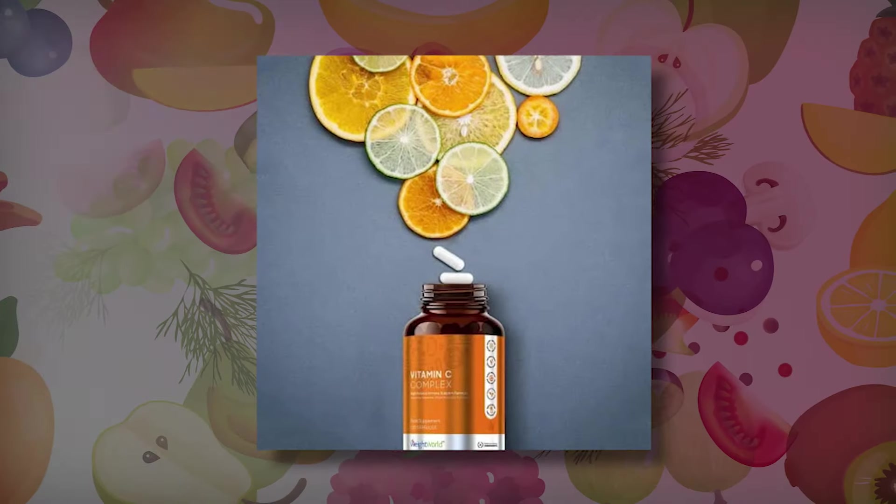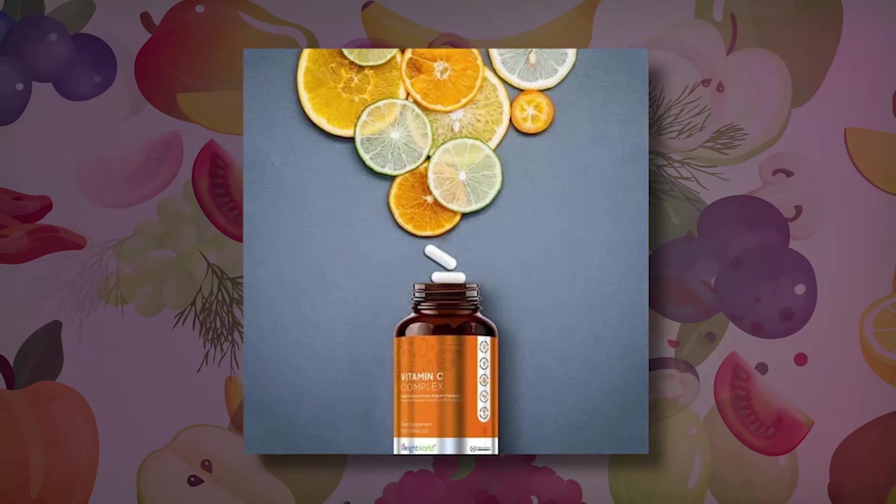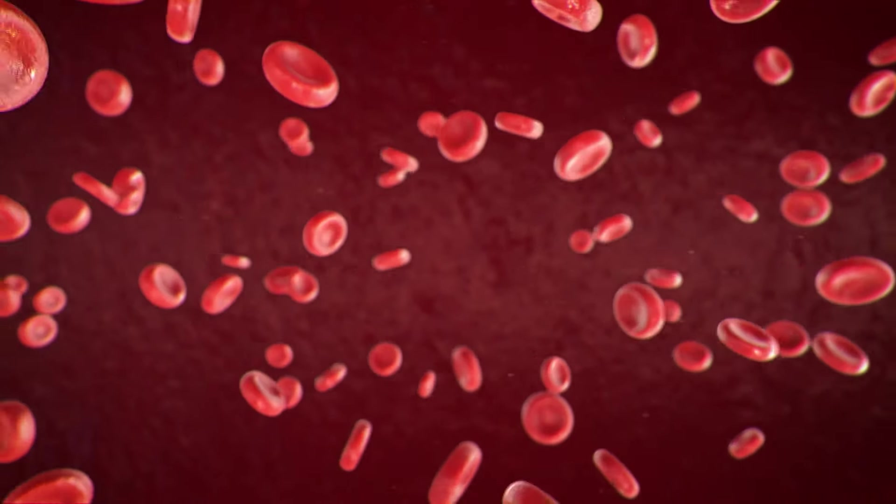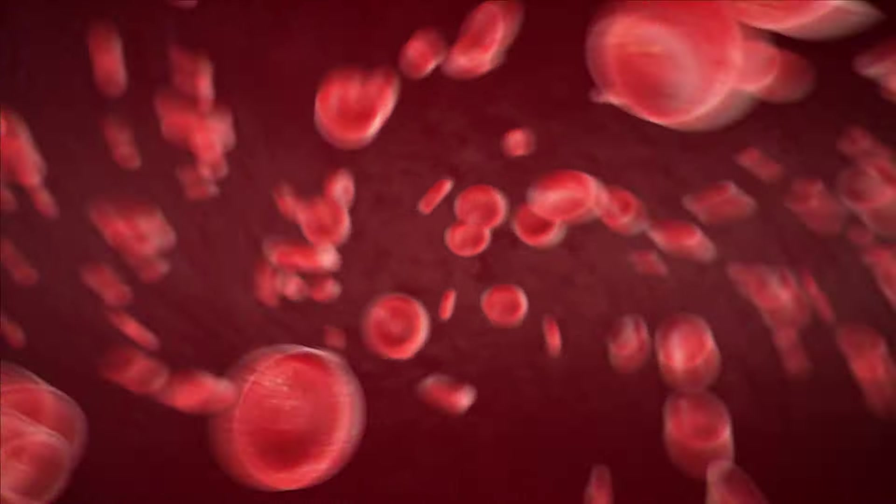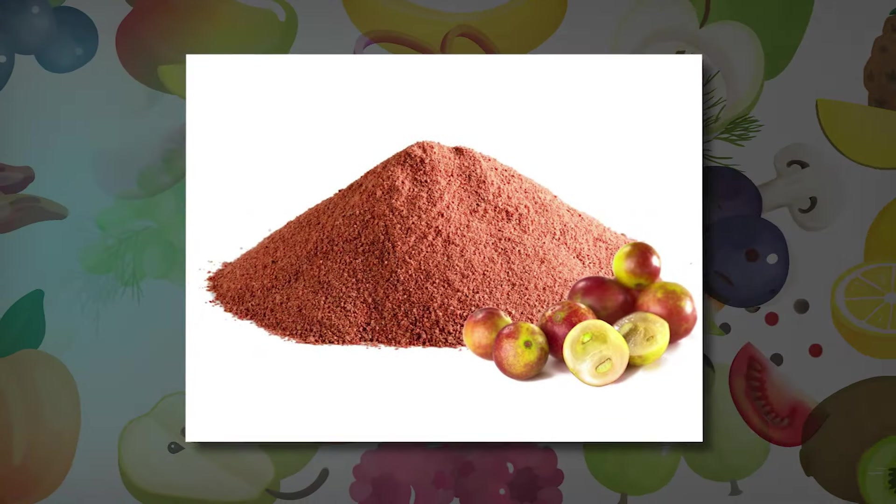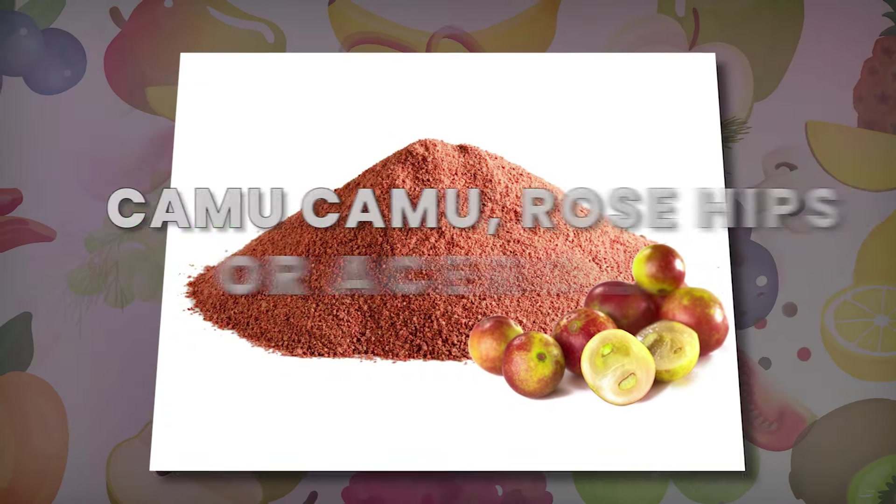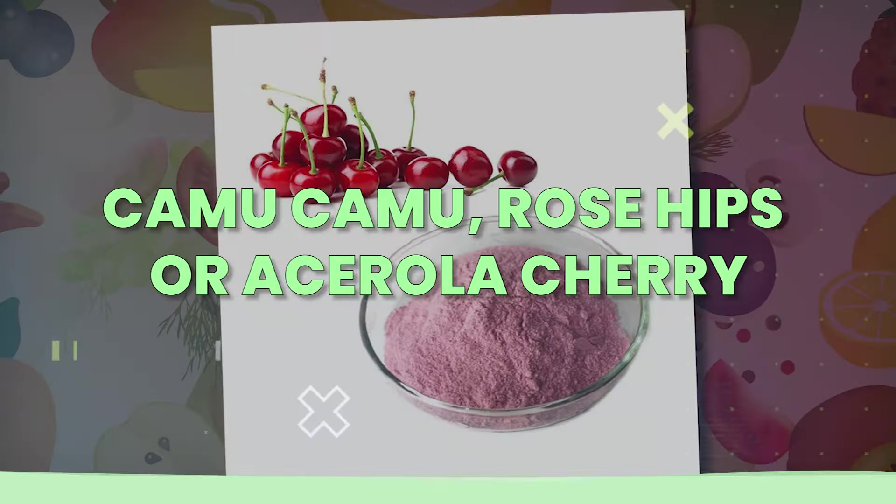Copper, flavonoids, J, K, and P factors are all present in the real vitamin C complex and are involved in maintaining healthy blood vessels, reducing inflammation, and enhancing collagen. However, if you choose to supplement, you can also obtain it by consuming whole fruit powders like camu camu, rose hips and acerola cherry.